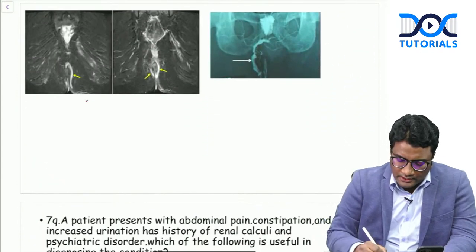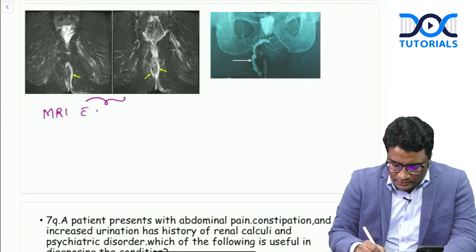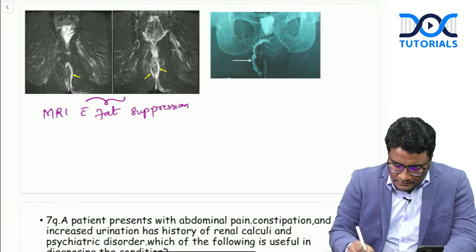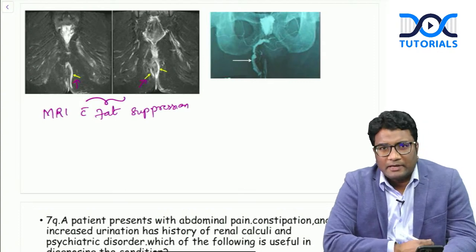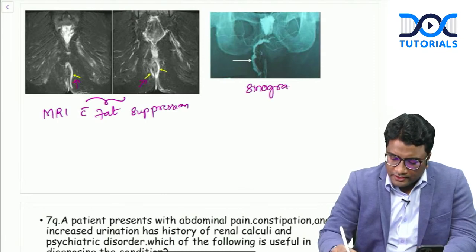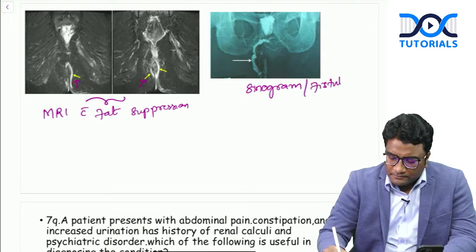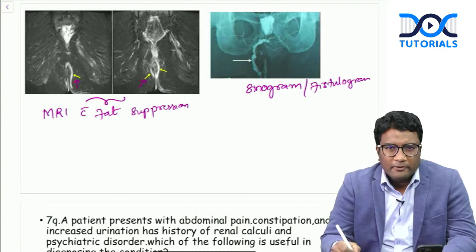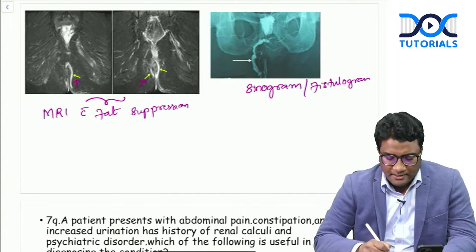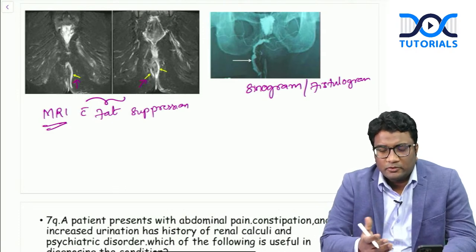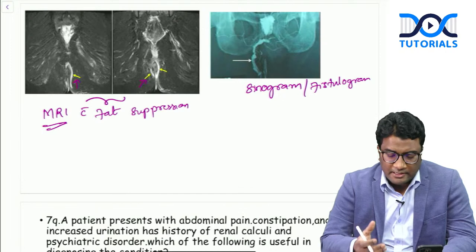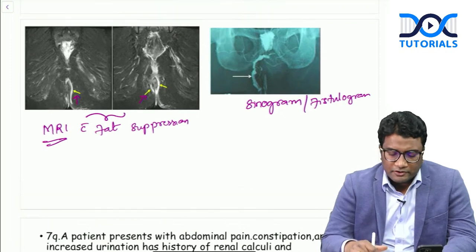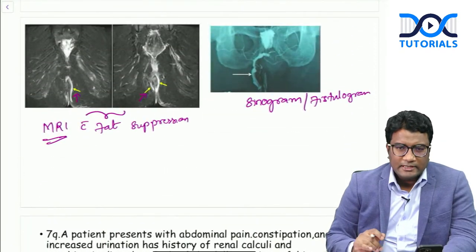MRI images with fat suppression show the fistula with yellow arrows - you can see abscess and fistula tracts evaluated on MRI. A sinogram or fistulogram involves injecting contrast inside the sinus and taking a radiograph, but you cannot evaluate its relationship with the sphincters that way. MRI is much better - it helps understand whether the fistula is trans-sphincteric, supra-sphincteric, or inter-sphincteric. You can look at the perineal structures better on MRI with multi-planar imaging.